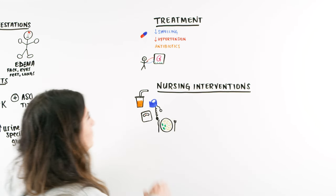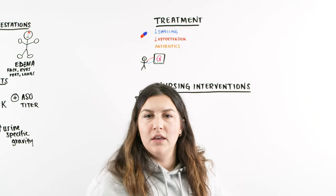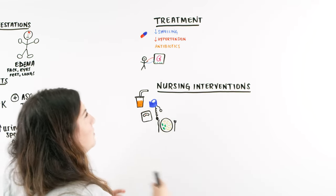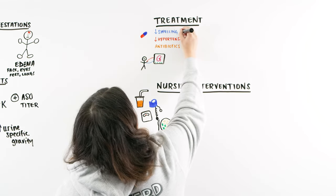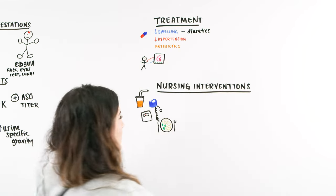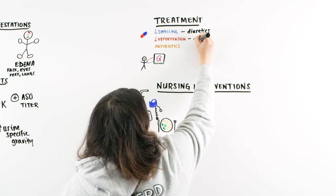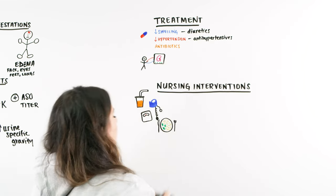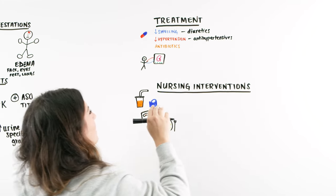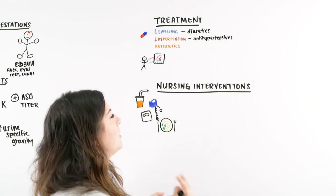What does treatment look like for this patient? If they're having swelling, our goal is to decrease it — so we can give diuretics to pull that water off and manage the fluid and edema. If they're having hypertension, we want to bring that down with antihypertensives. And if there is any lingering infection, we can give antibiotics. Depending on the patient, if they're having fevers, we can give Tylenol and provide any other supportive care.